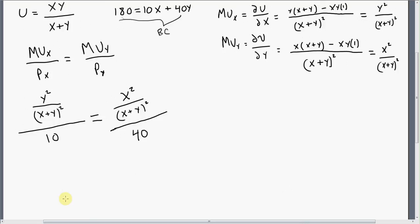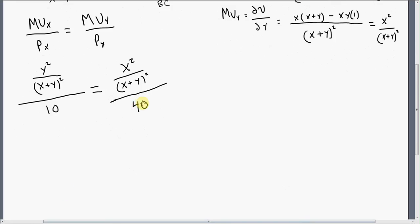Now we just need to simplify this mess. First thing to do is, if we multiply everything through by 40, 40 here and a 40 over here, we're going to be left with 4Y squared over X plus Y squared equals X squared over X plus Y squared. So 40 divided by 10 is where the 4 is coming from. These 40s, of course, cancel. And the next thing we can just multiply through by the denominator here. So multiply everything through by X plus Y squared. This simplifies to 4Y squared equals X squared.